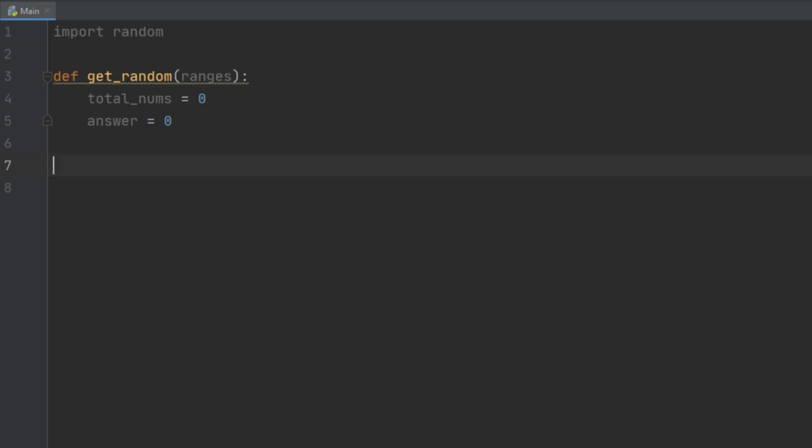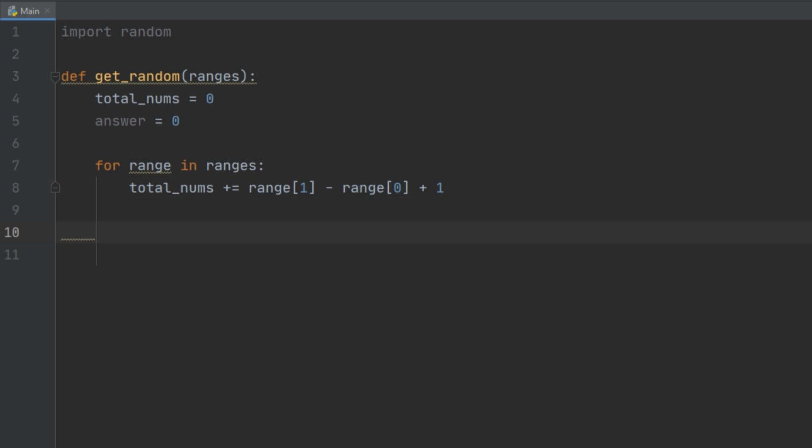Now that we have a general algorithm, let's translate this into code. I defined a function called get_random which takes that list of ranges. I initialized two variables, total_nums and answer, and imported the random package. The first thing we're going to do is loop through all the ranges and get the total numbers. Now we need to get that random number. In our example we started with 1, but I'm going to start with 0 because computers start counting at 0 and it'll be more intuitive. At this point we need to loop through all the ranges again and see how many numbers are in the current range.